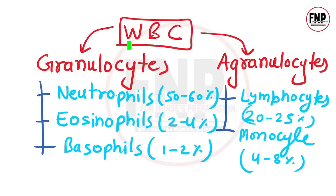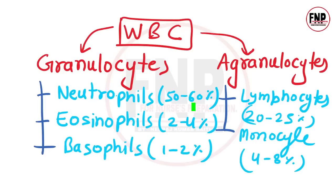WBC ke types: WBC ko hum do prakar se classify karte hain — granulocytes aur agranulocytes. Granulocytes teen type ki hoti hain: neutrophils, eosinophils aur basophils. Sabse zyada payi jaane wali WBC type neutrophils hain, jo total WBC ka 50–60% hoti hain. Agranulocytes mein do types hote hain: lymphocytes aur monocytes. Lymphocytes total WBC ka 20–25% hoti hain jabki monocytes 4–8% hoti hain.